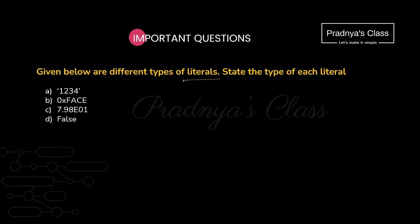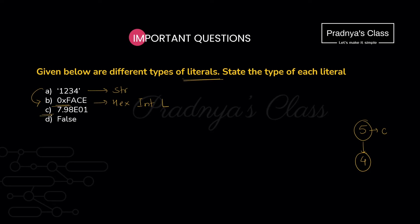The next question is based on literals — there are 5 types in total. The first literal is enclosed in single quotes, so it is a string literal. The second literal starts with 0x, which is a hexadecimal integer literal. The third has decimal numbers with a decimal point, so it is a floating point literal. The last one is a boolean literal because True and False come under boolean literals.